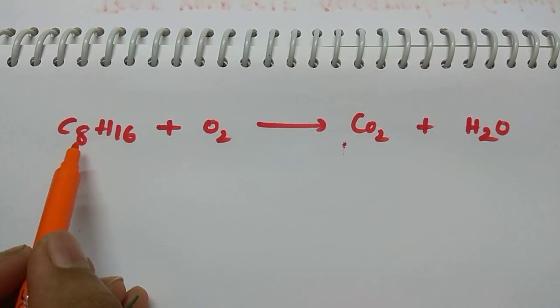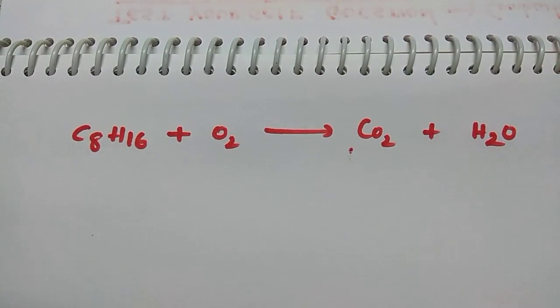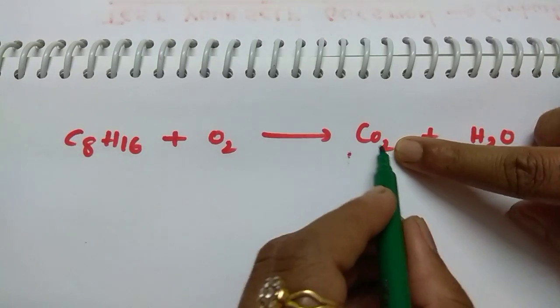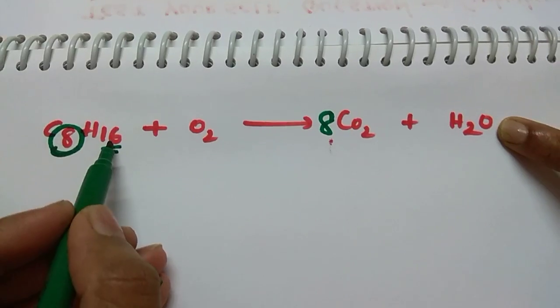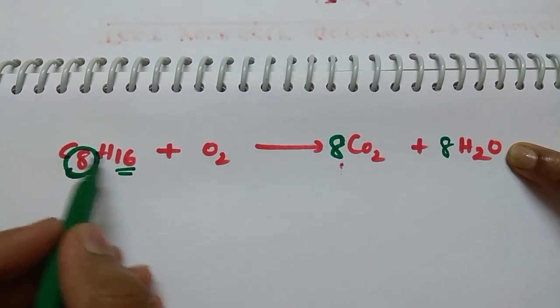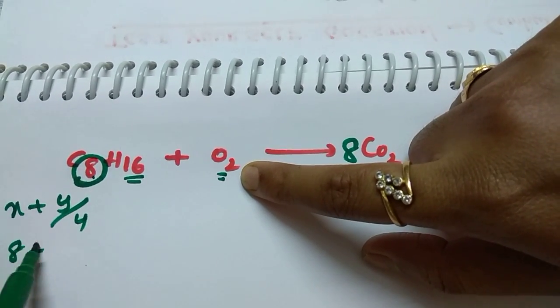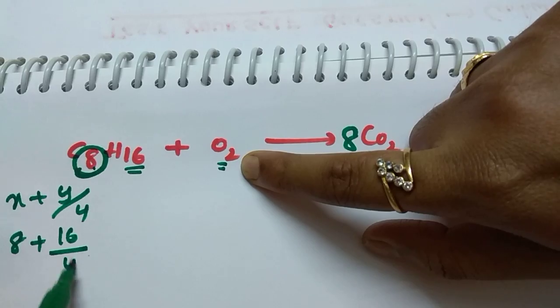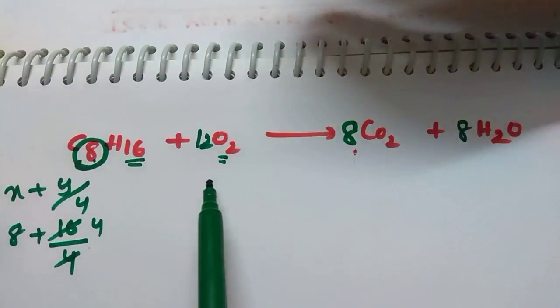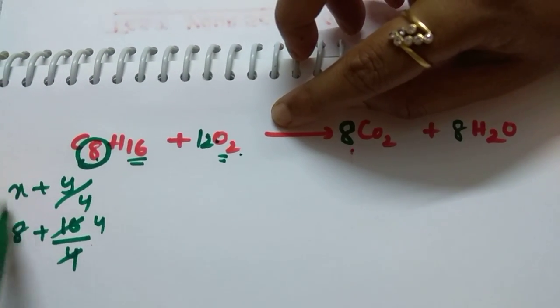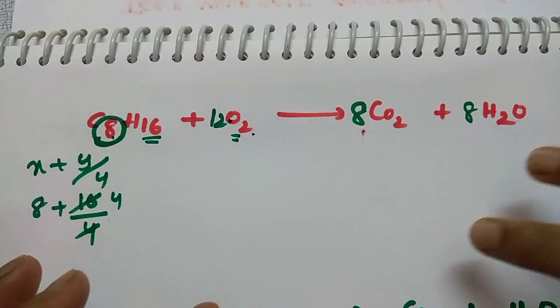If octane undergoes combustion we get CO2 and H2O. Just balance this reaction. How many CO2s? What is the formula? Just x equals 8. How many H2Os? y by 2 equals 16 by 2 equals 8. And how many O2s? x plus y by 4, that's it. x is 8 plus 16 by 4 equals 4. 8 plus 4 equals 12. Just 12 O2. Whether it is alkane, alkene, or alkyne, directly you can use this trick.